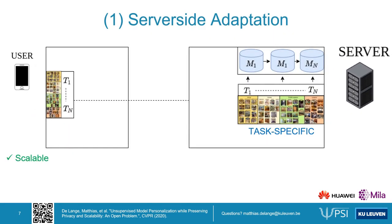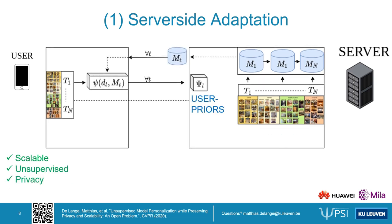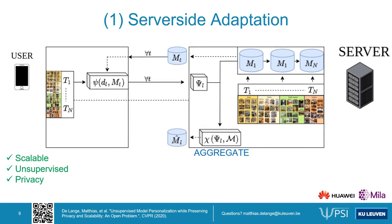In the first phase we train a sequence of task-specific models on the server, where making the model count independent of the number of users greatly enhances scalability. For each of these models we obtain a user prior such as parameter importance, which are then aggregated to a single personalized model.